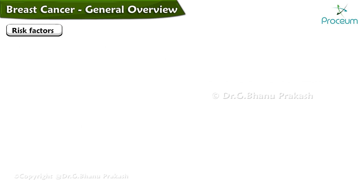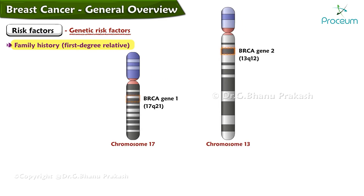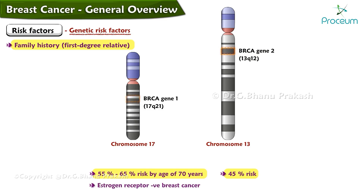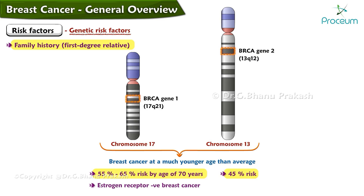Genetic risk factors associated with breast cancer include family history and first-degree relative, BRCA1 or BRCA2 mutations. Women who are BRCA1 carriers have a 55 to 65 percent risk of developing breast cancer by age 70, compared with 45 percent who are BRCA2 carriers. Patients with the BRCA1 mutation are more likely to have estrogen receptor-negative breast cancer. Women with BRCA1 or BRCA2 mutations tend to develop breast cancer at a much younger age than average.